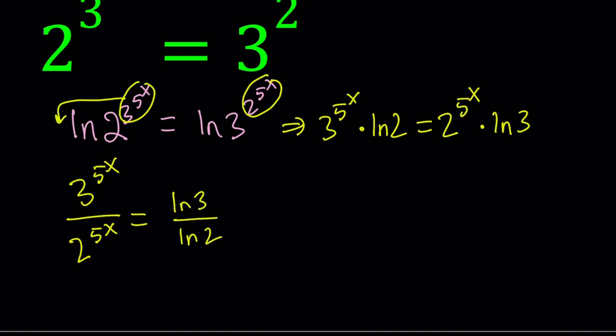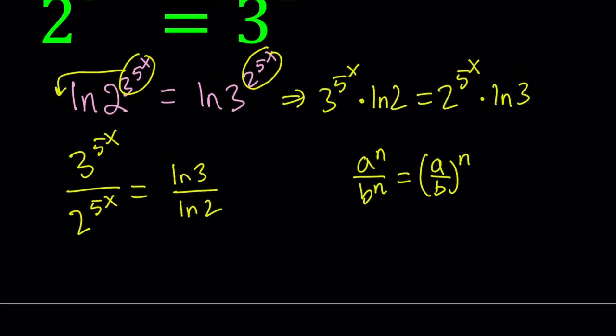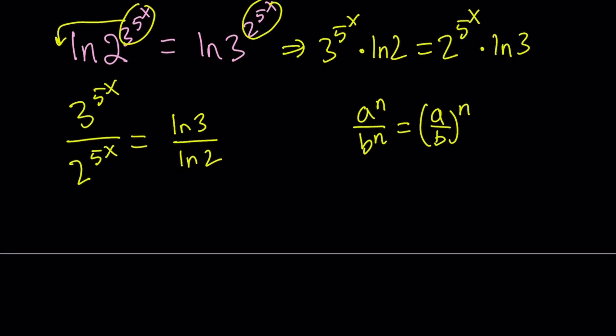Now we're going to use a property of exponents. If you have a to the n divided by b to the n, you can write it as a over b to the n. Obviously, n doesn't have to be an integer here. It can be any real number.